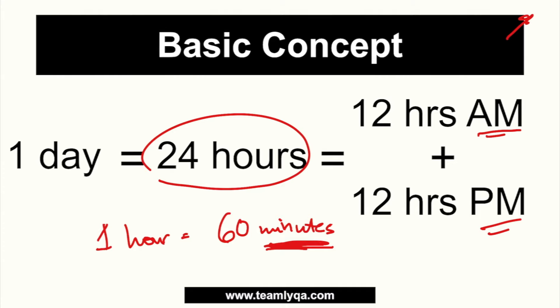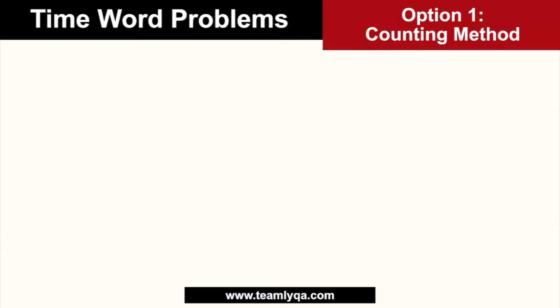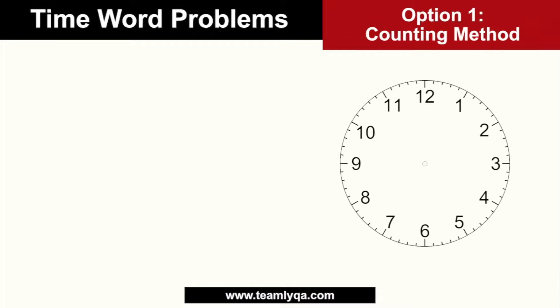The key times here are: one day equals 24 hours, 12 in the morning, 12 PM, and per hour is 60 minutes. Now the first method is actually very simple — the counting method. You're basically just going to count, whether you use your fingers or a clock, that's what we'll base it on.